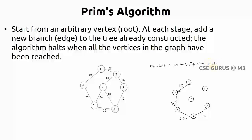Care must be taken that you should not form any cycle. Whenever you connect one vertex to another it should not form a cycle. Now considering vertices 1, 6, 5, 4, and 3, the adjacent edges are: 1 to 2 is 28, 5 to 7 is 24, 4 to 7 is 18, and 3 to 2 is 16. Among all those, 16 is the minimum, so we connect that edge. The cost added is 16.